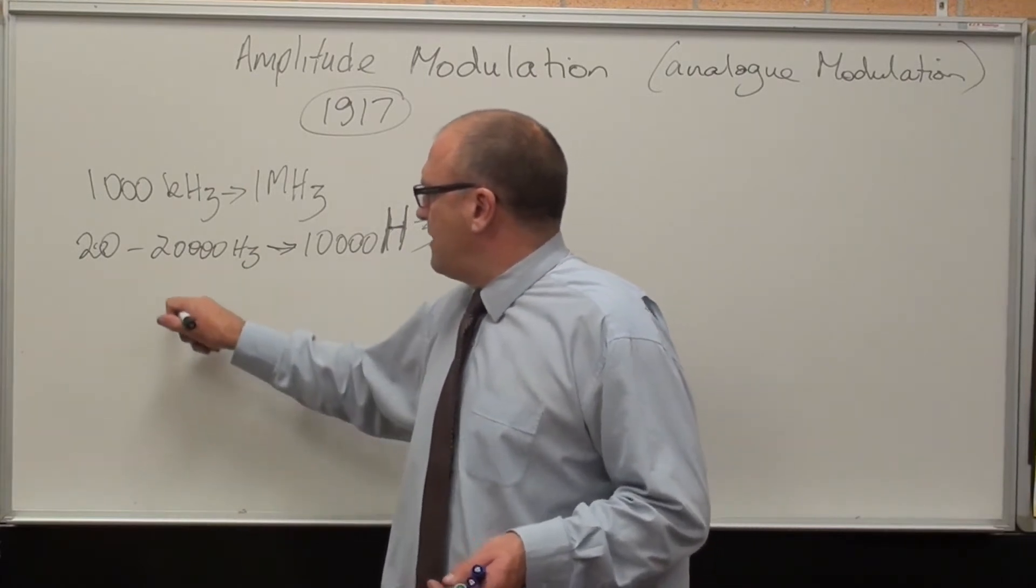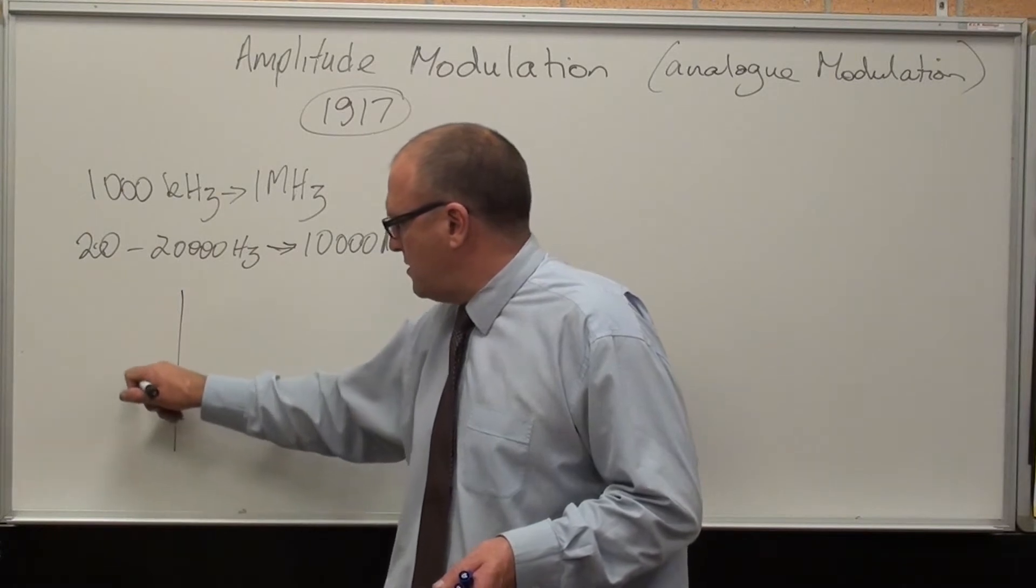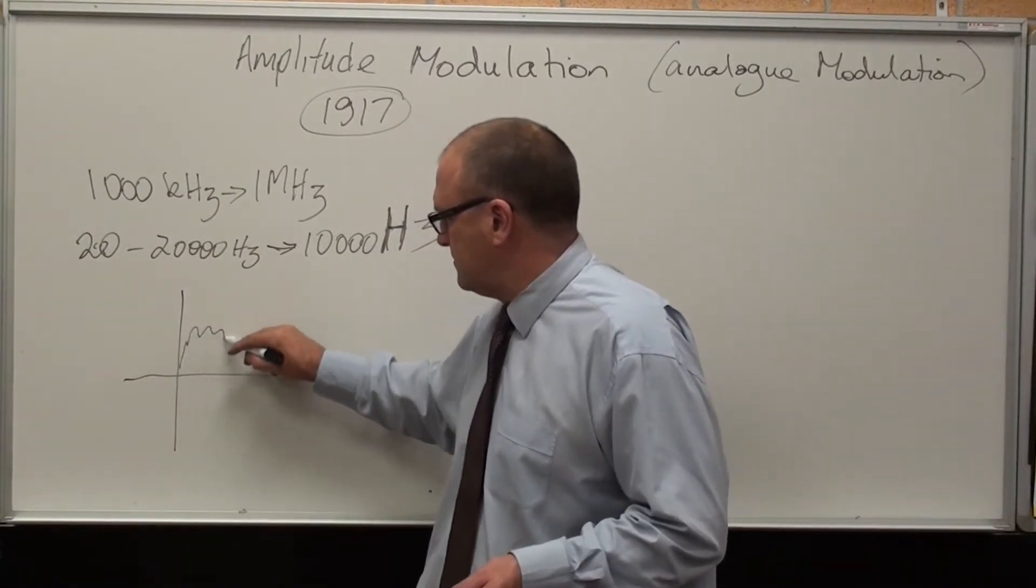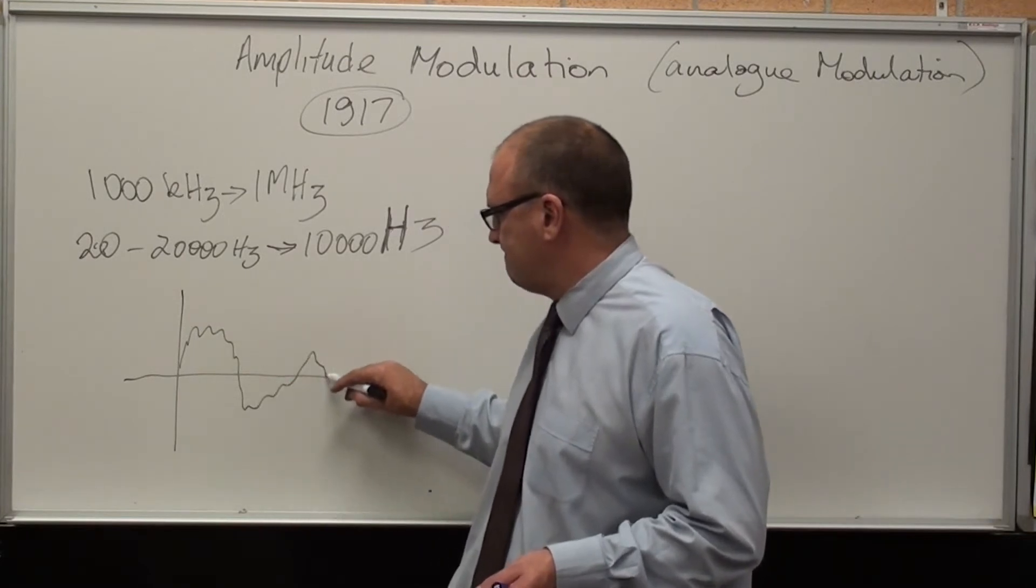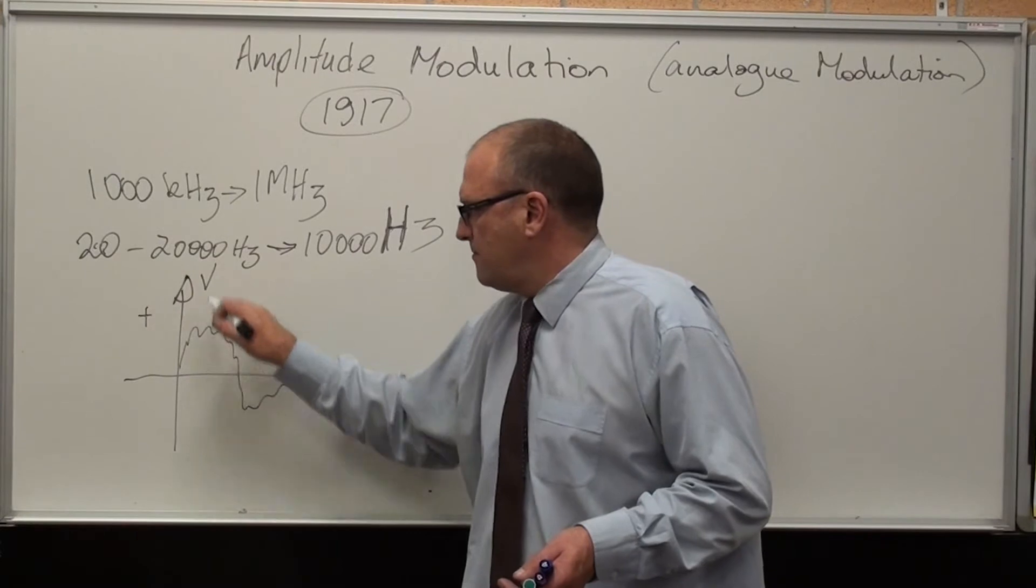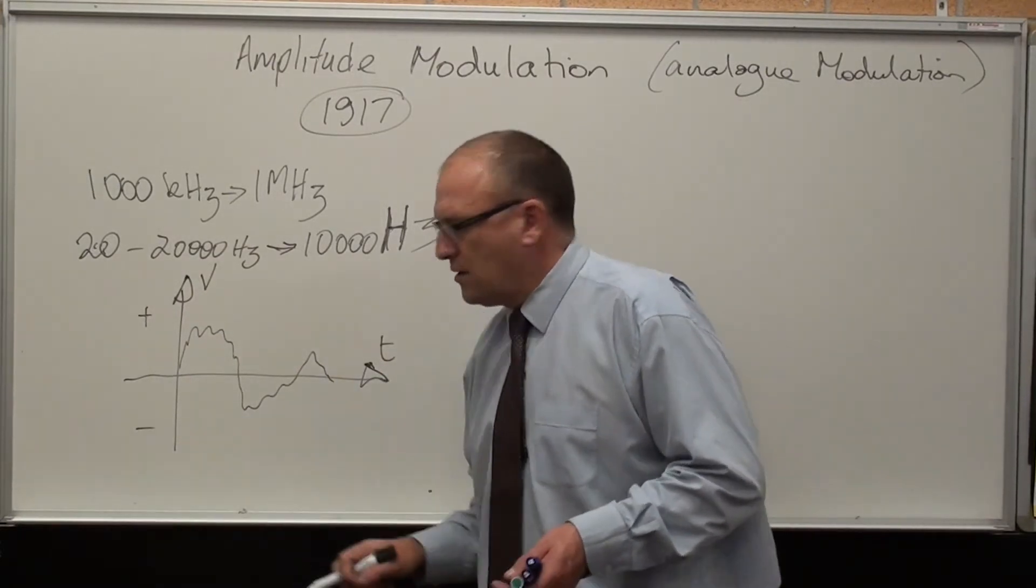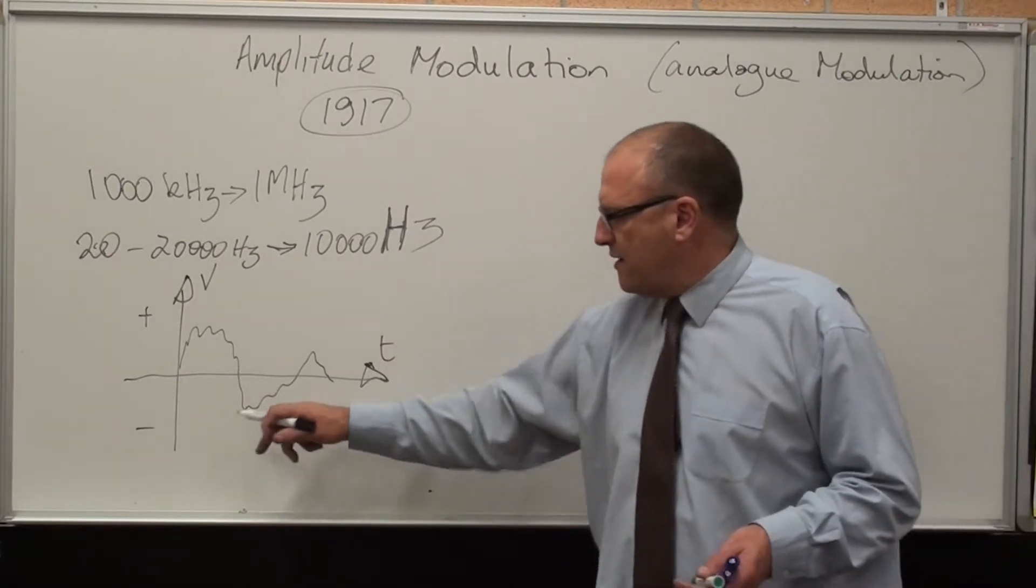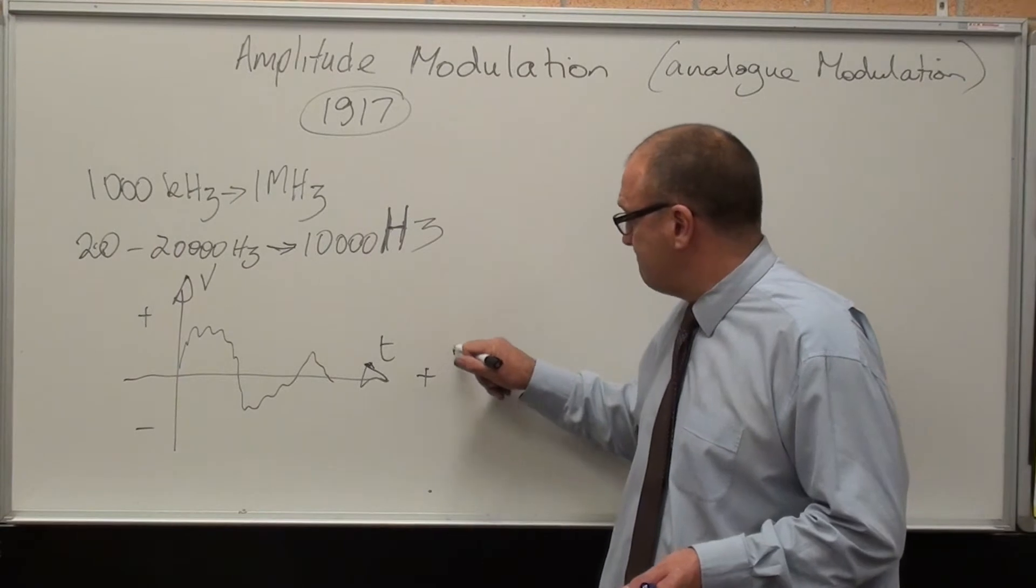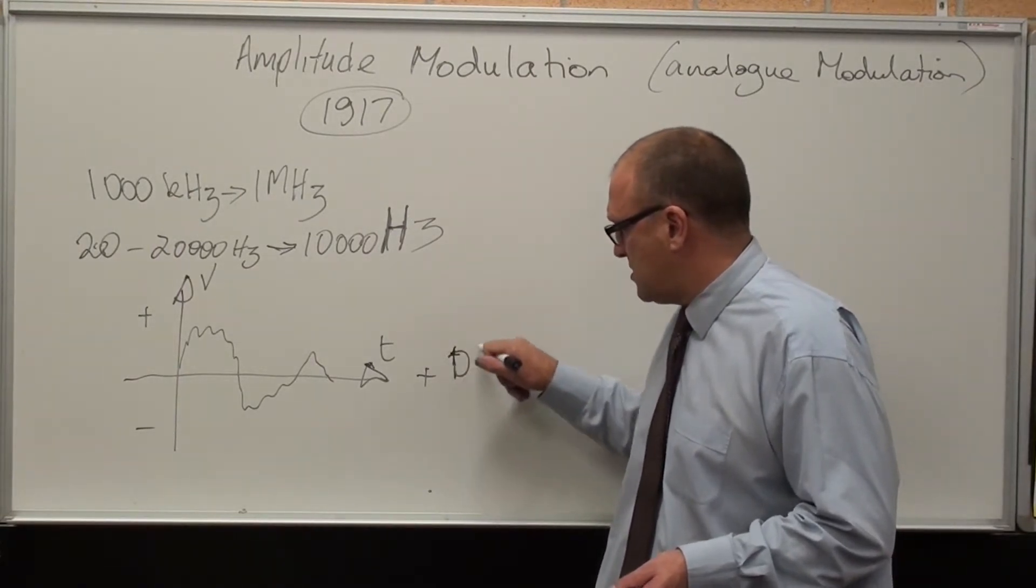That means if I am going to amplitude modulate, as we know the signal out of a speaker looks like that. Positive voltage versus time. We need to get rid of the negative. So we add it to a DC voltage, plus, pick a number that suits, plus DC.